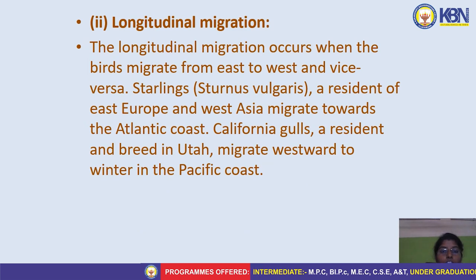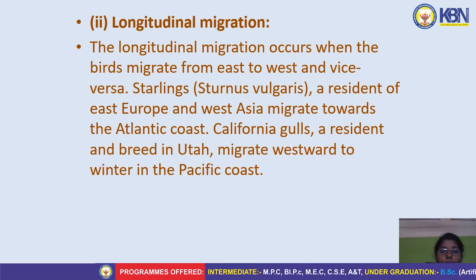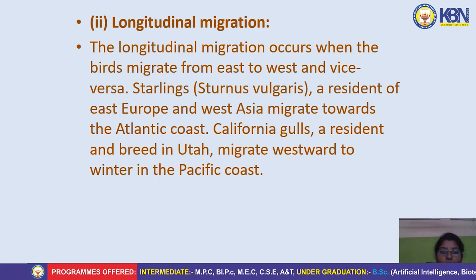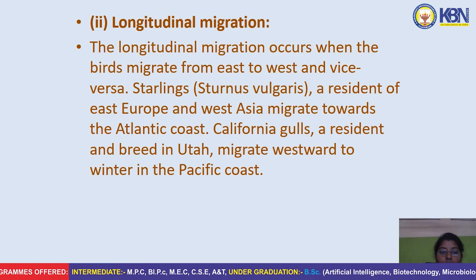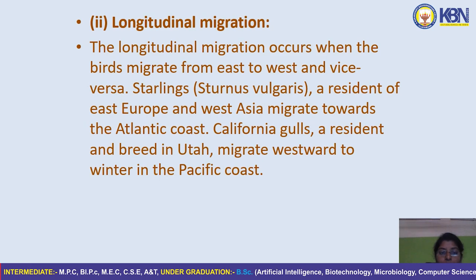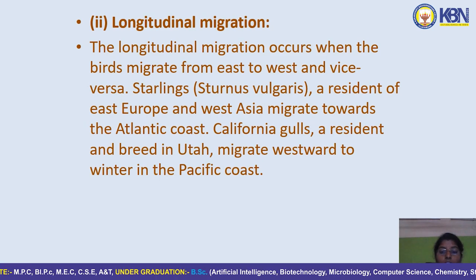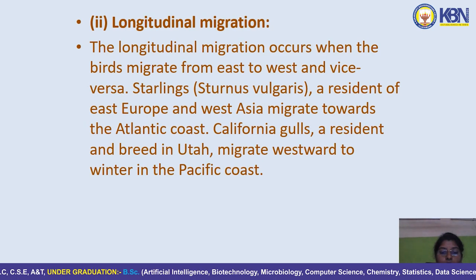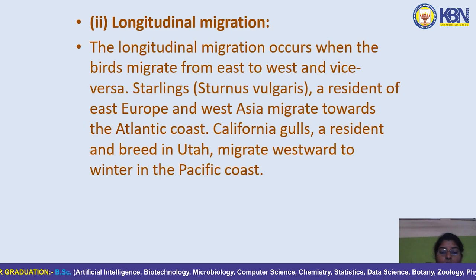Longitudinal migration occurs when birds migrate from east to west and vice versa. Starlings, residents of eastern Europe and western Asia, migrate towards the Atlantic coast. California gulls, residents breeding in Utah, migrate westward to winter on the Pacific coast.